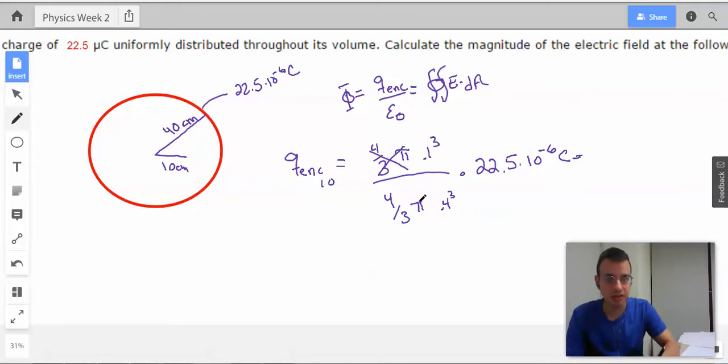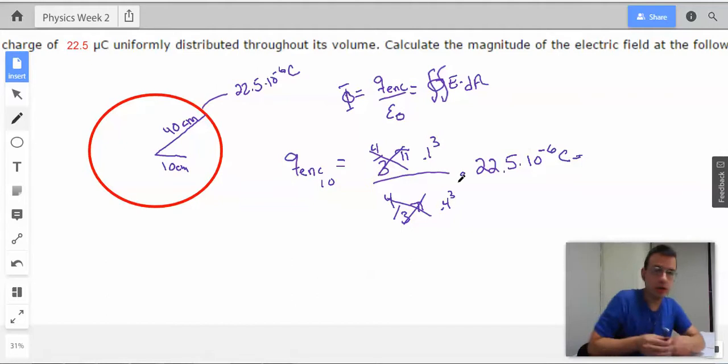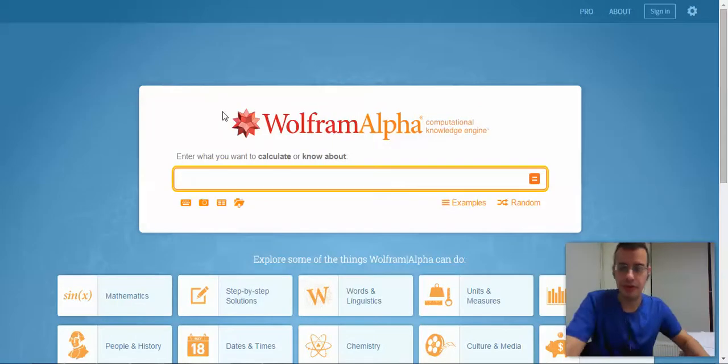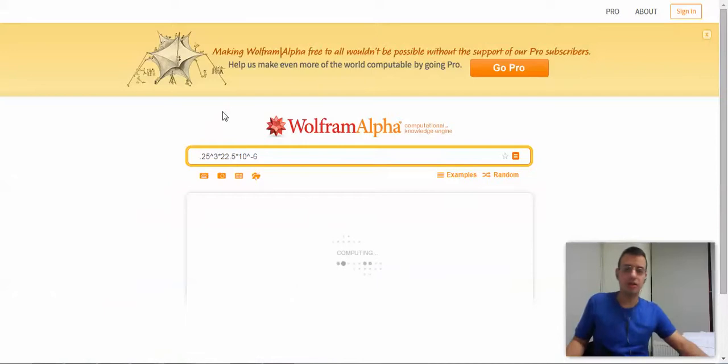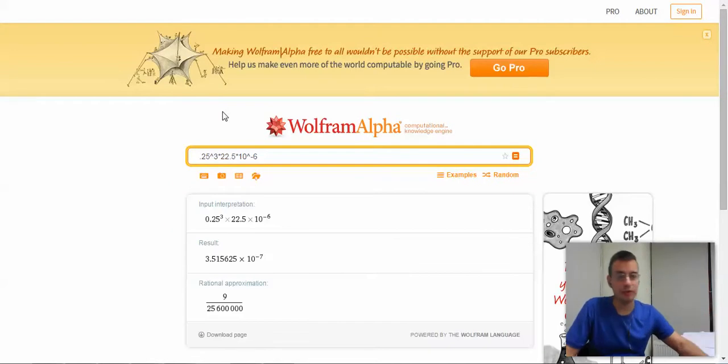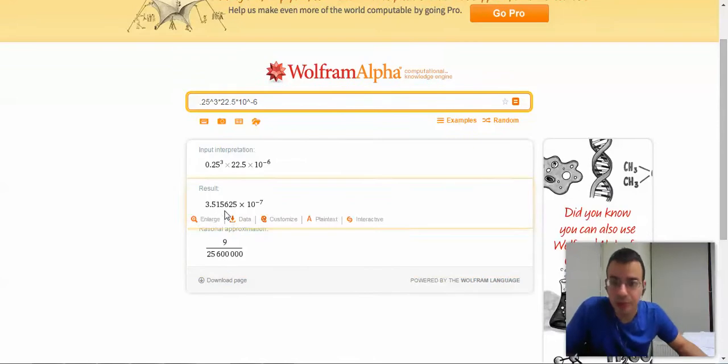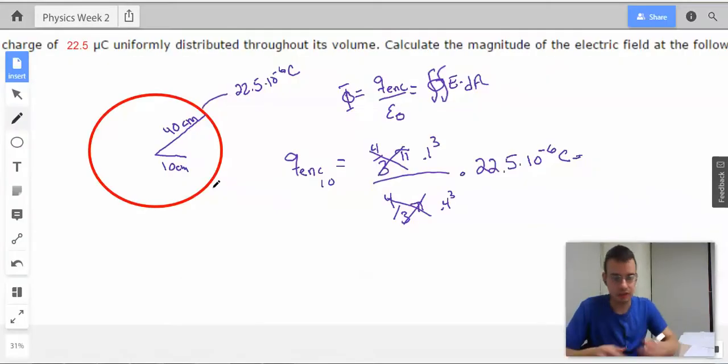Times 22.5 times 10 to the negative 6. The nice thing about this is these guys cancel out, these guys cancel out, and we have 0.1 divided by 0.4 quantity cubed. So it's just the same as 0.25 cubed. I'm going to do 0.25 cubed times 22.5 times 10 to the negative 6. Because 1 cubed over 4 cubed is the same as 1 divided by 4 quantity cubed, which is 0.25. So we have 3.52 times 10 to the negative 7. And that will be Coulombs.